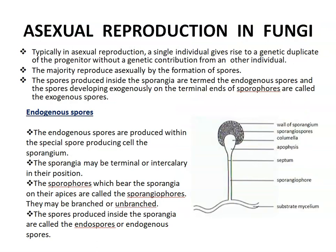Next, asexual reproduction in fungi. In fungi, asexual reproduction occurs by means of endogenous spores and exogenous spores. Endogenous spores, as the name suggests, are produced within a special type of structure. Here you can see the mycelium and a sporangiophore — that structure is the sporangiophore. This is the sporangium, and inside the sporangium, sporangiospores are present. These small black-colored structures are sporangiospores. The sporangium may be terminal or intercalary.